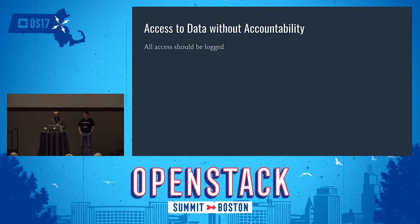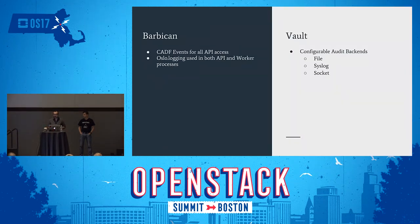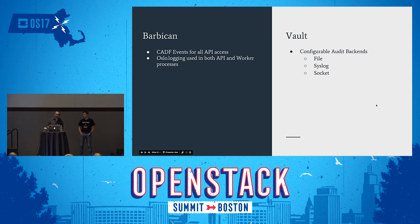For audit logging, every request should be logged. Barbican has middleware that emits CADF events for all API accesses, and uses Oslo logging throughout so everything in the API and worker processes is logged — you point those logs wherever you want. Vault has a configurable logging back-end system as well, with options to write to a file or to a syslog server.